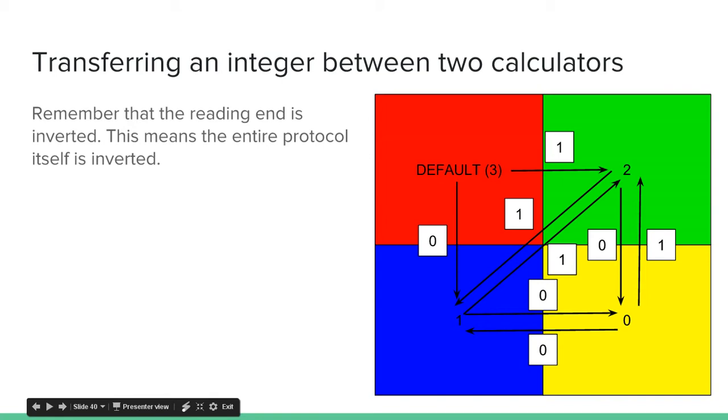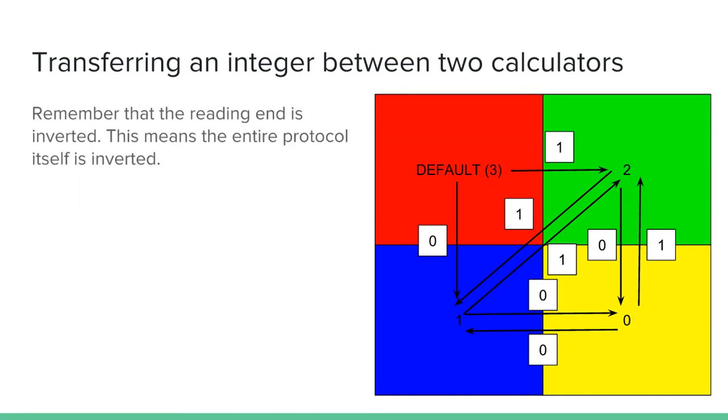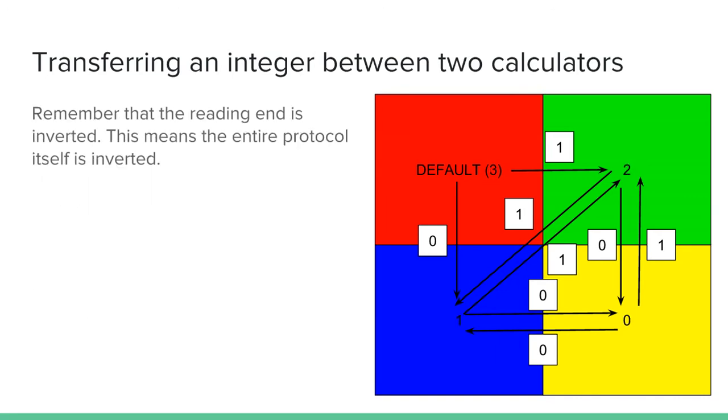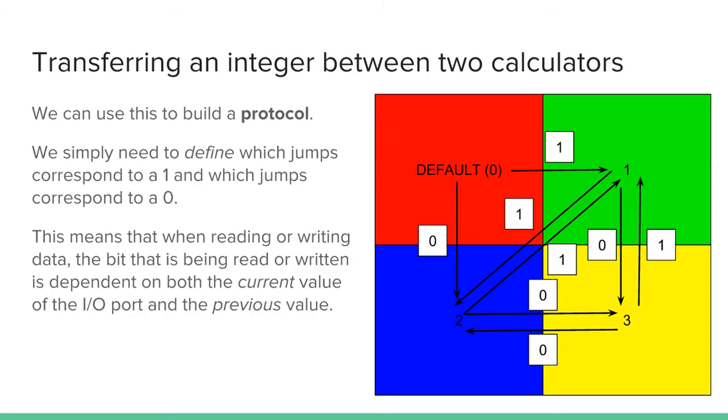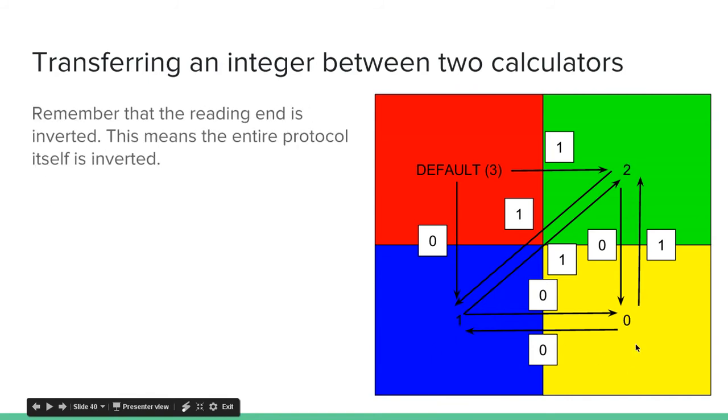Remember that the reading end is inverted. This means the entire protocol itself is inverted. So all this means is you change the numbers. The default on the reading end is 3. 1 changes to 2, 2 changes to 1, and 3 changes to 0.